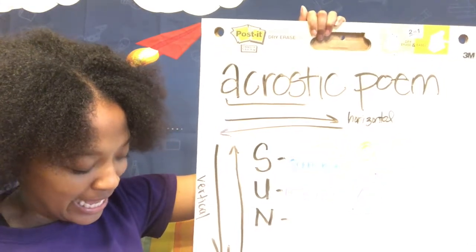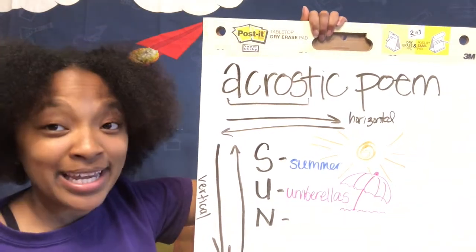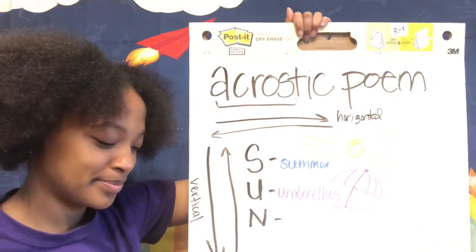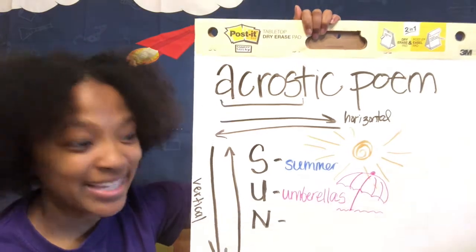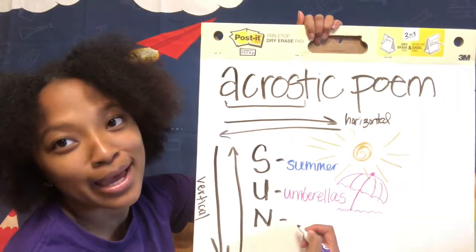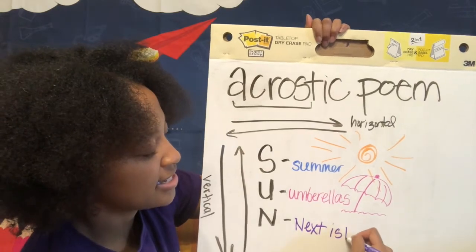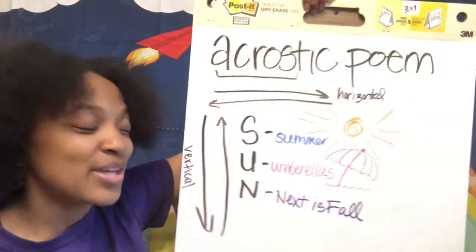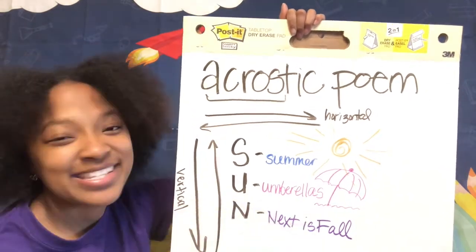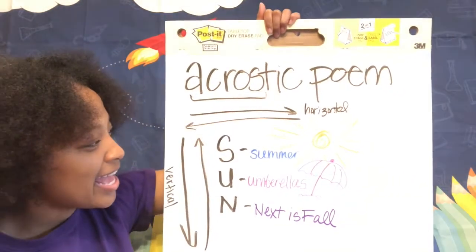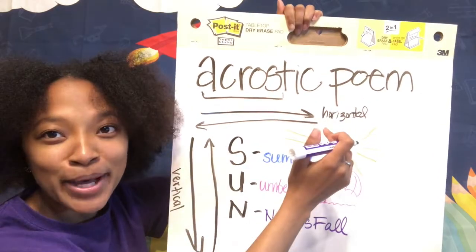And then what about the letter N? What's something about the sun related to the letter N? How about 'next'? What comes after summertime? Next is fall. So we have summer, umbrellas like beach umbrellas protecting you from the sun, and then after summer, next is fall. So there is an acrostic poem for the word sun.